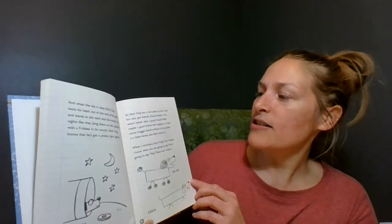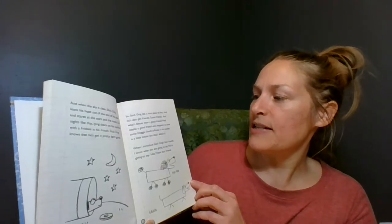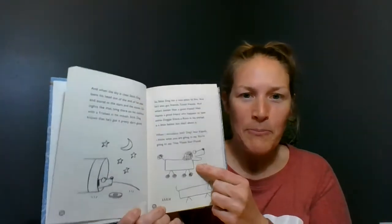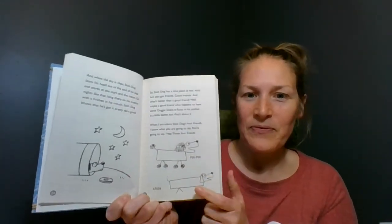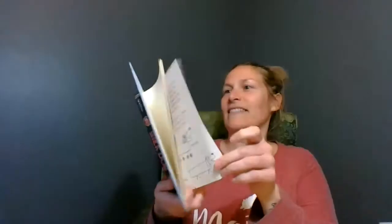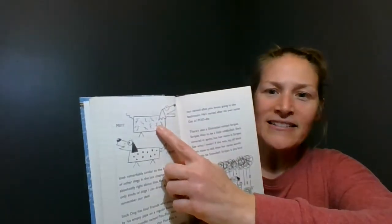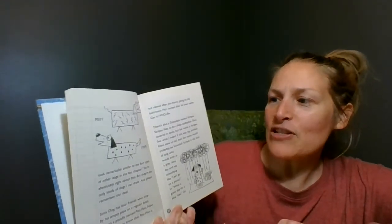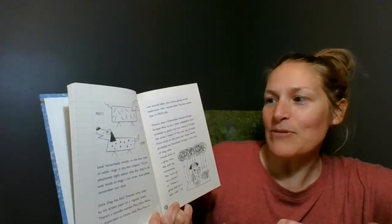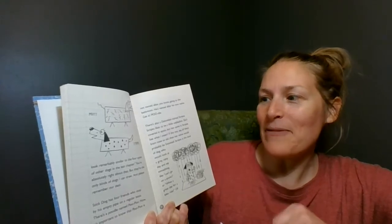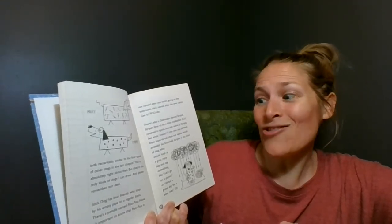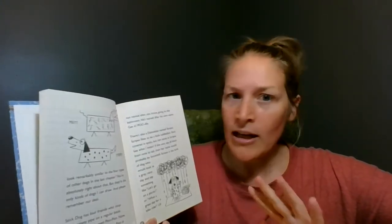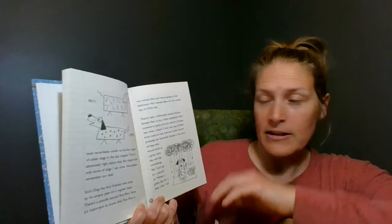He can hear crickets and toads at night. And when the sky is clear, Stick Dog leans his head out of the pipe and stares at the stars and the moon. On nights like that, lying there on his cushion with a Frisbee in his mouth, Stick Dog knows he's got it pretty darn good. So Stick Dog has a nice place to live and he's also got friends.